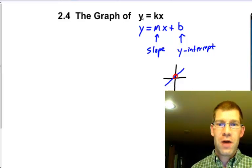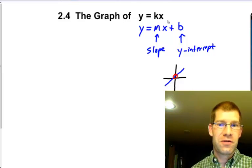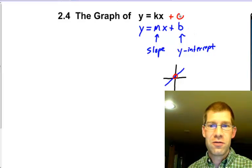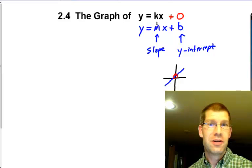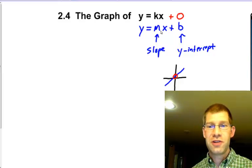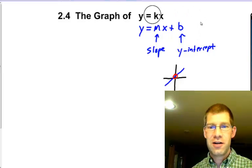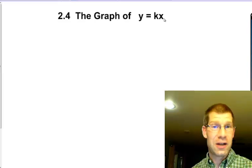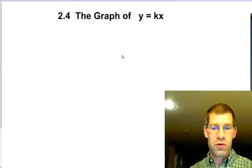So if y equals kx is our new equation for today, there is nothing after it. So the question becomes, what is b? Well, b has to be zero, because y equals kx plus zero is the same as y equals kx. So in other words, when we have the new stuff for today, this new stuff is always going to be a line equation, and it's going to be a line equation that goes through the origin or through the center of a normal graph.